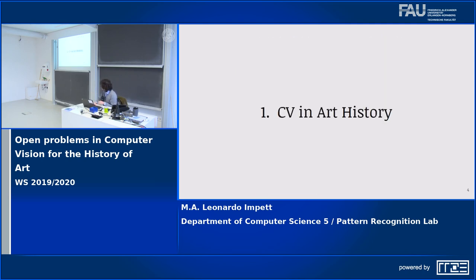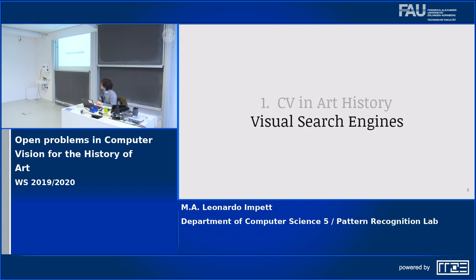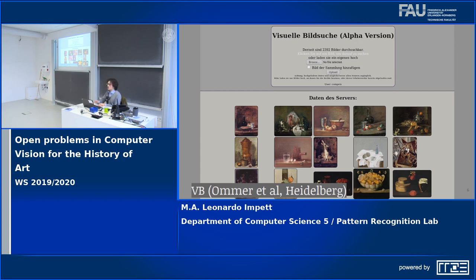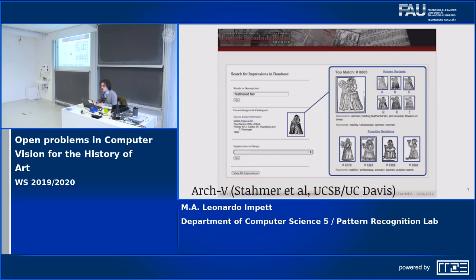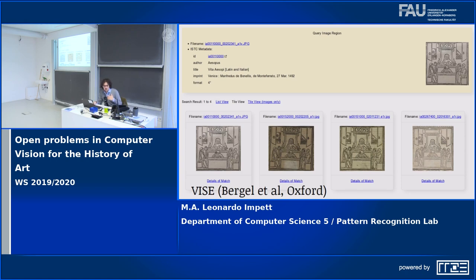Just a few slides on computer vision in art history — which is not the same thing as computer vision on art, a big world with interesting problems in non-photographic image understanding. What art historians actually end up seeing largely is visual search engines, which they use from commercial tools like Pinterest to research projects like the one from Heidelberg. There are also many search engines for prints and woodblocks, because they're repeated in different publications, and tracing them is a common art historical challenge — Oxford's VGG and Zisserman's group have worked on that.